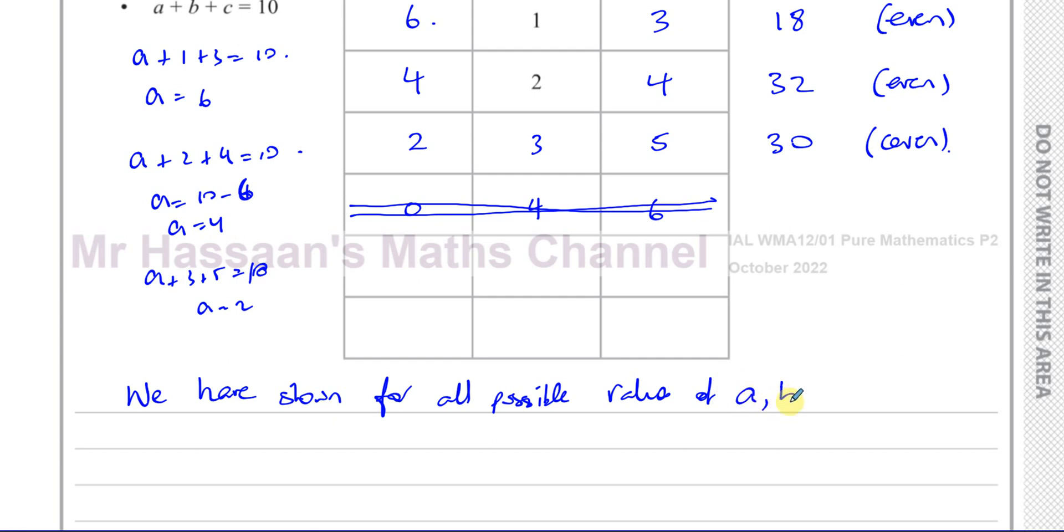Of A, B, and C, that their product is always even. So you must make a statement. Even if we say therefore always even, or something like that, it's better to make a statement like this. We have shown for all possible values of A, B, and C that their product is always even.